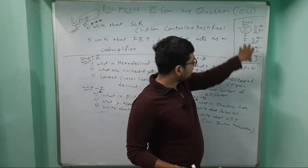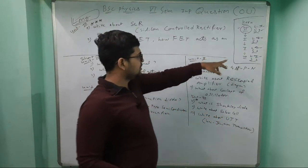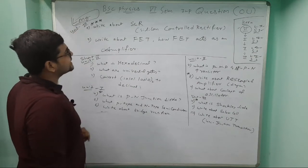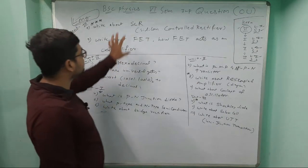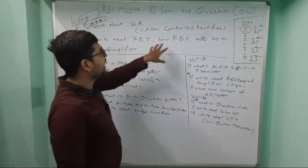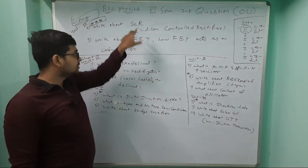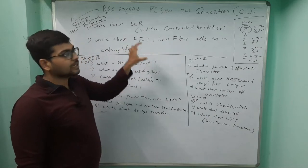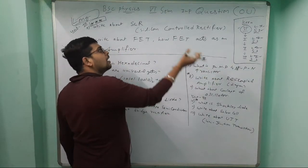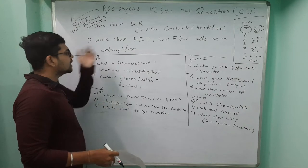Unit 3 long answer questions: First, write about SCR - Silicon Controlled Rectifier. Very important, three stars. Next, write about FET and how FET acts as an amplifier. Field Effect Transistor - draw characteristics, diagram, graph explaining behavior, and application. Explain how it acts as an amplifier with diagram.